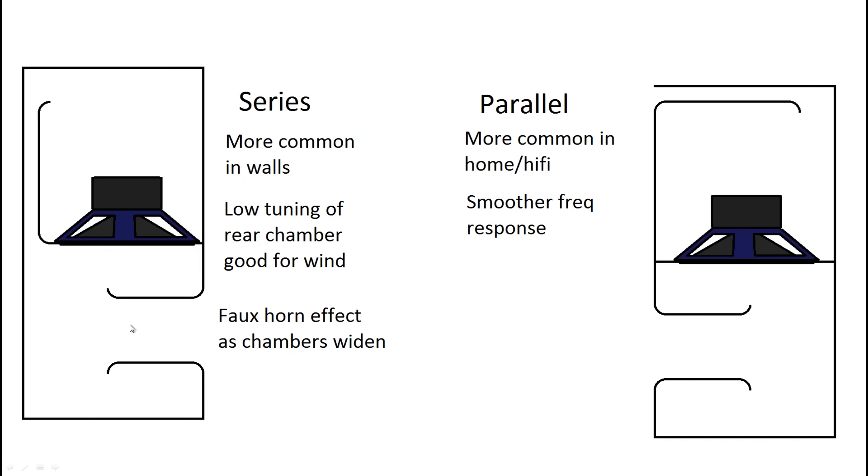And each one has its own benefits. This one acts like kind of like a faux horn because it goes from a chamber to chamber to chamber. It kind of acts like a horn. Whereas parallel the advantage here is two different ports and you can do specific things with each one. Series though usually you need to have a big wide front port in order to allow the air flow in the low frequencies to freely flow through.